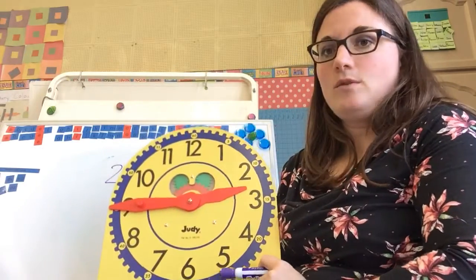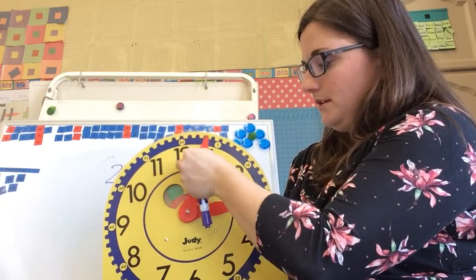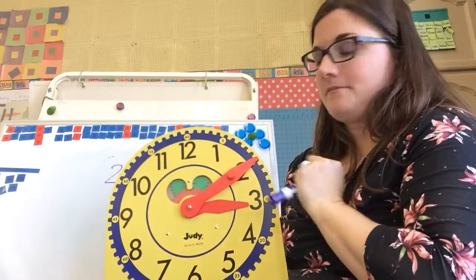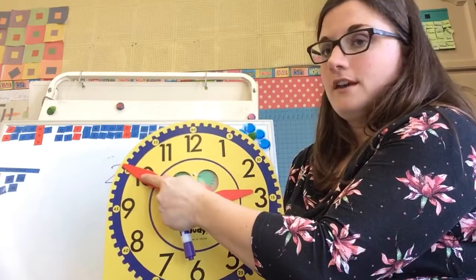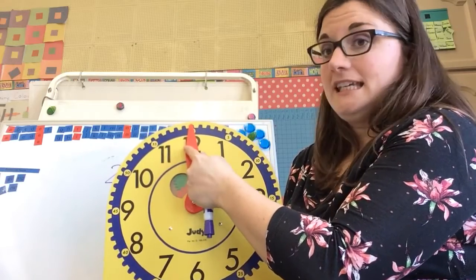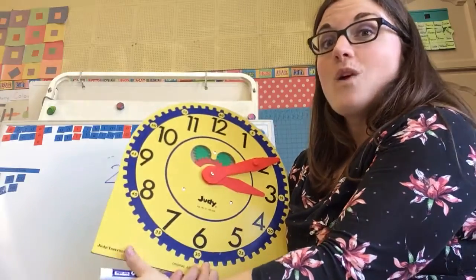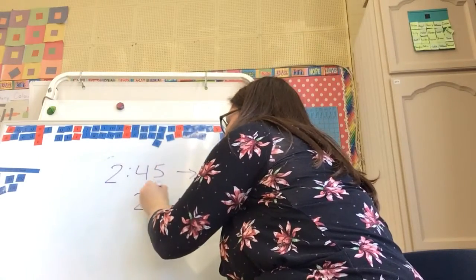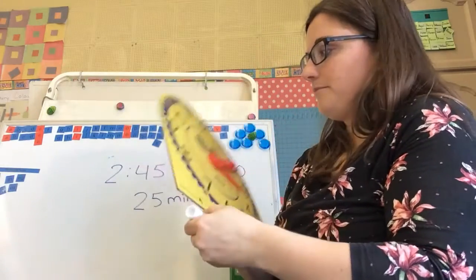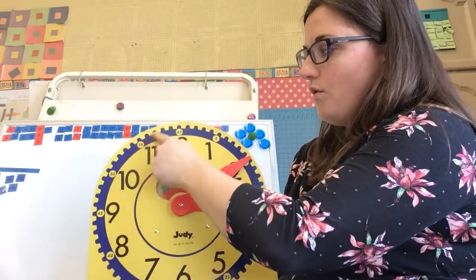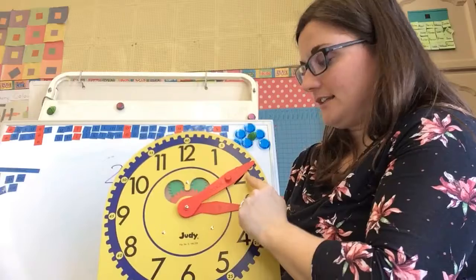How many minutes will that take us to get from 2:45 to 3:10? Let's go back and see. 2:45, let's count: 5, 10, 15, 20, 25. And remember, when you go over the 12 it's the next hour. So it wouldn't be 2:10, it's going to be 3:10.